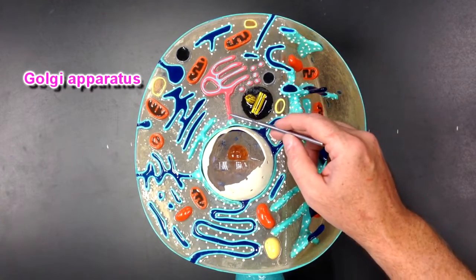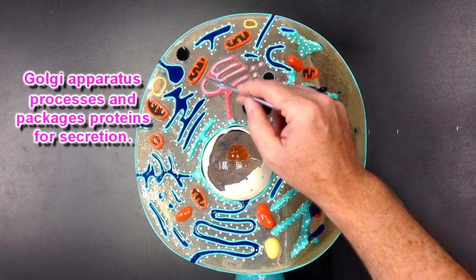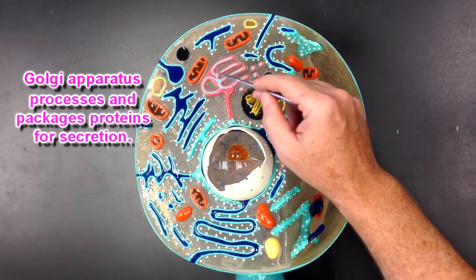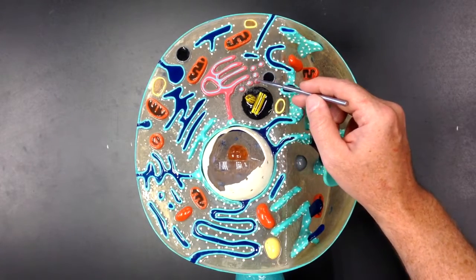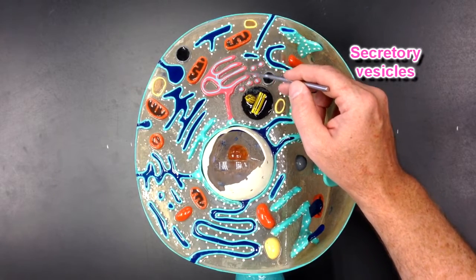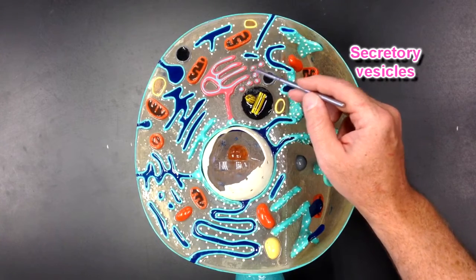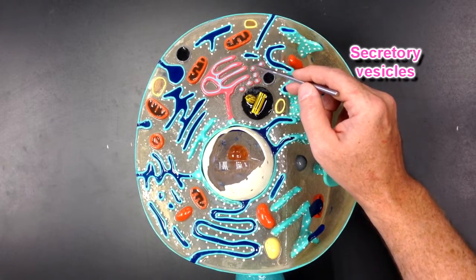The Golgi apparatus is this structure right here and the Golgi apparatus is going to process and package proteins and secretions. These would be the vesicles coming from or originating from the maturing phase of the Golgi apparatus and those vesicles would contain protein, specifically enzymes.